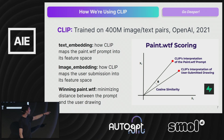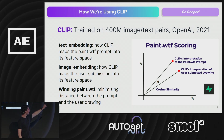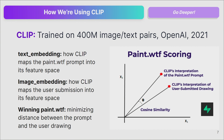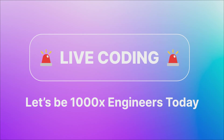Here's what we're going to build: an app where a text embedding is produced for the Paint.WTF prompt — the thing we tell the user to draw. The user will draw, we'll get an image embedding of that drawing, and then we'll do cosine similarity to see which image embedding is most similar to CLIP's interpretation of the text. Winning Paint.WTF is minimizing the distance between the prompt and the user drawing. The leaderboard was powered by Supabase.